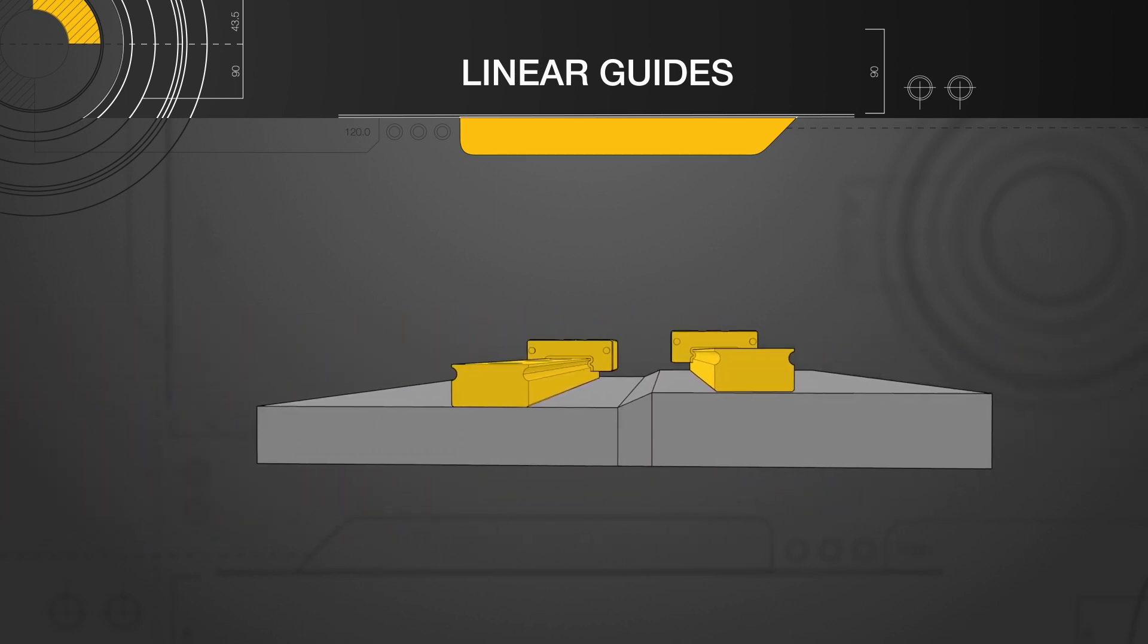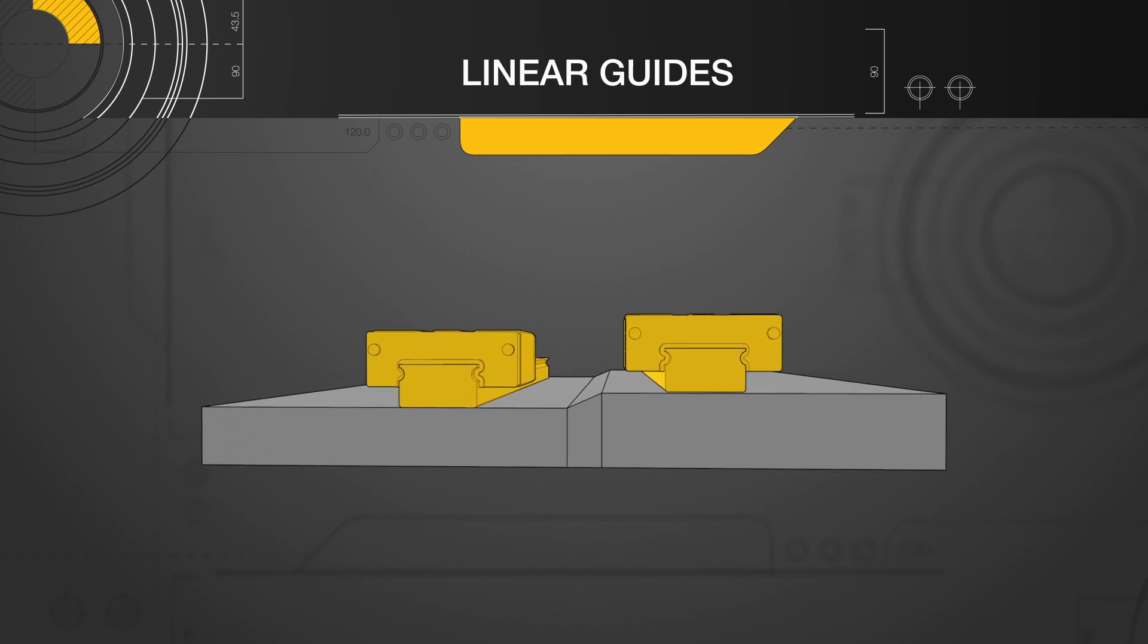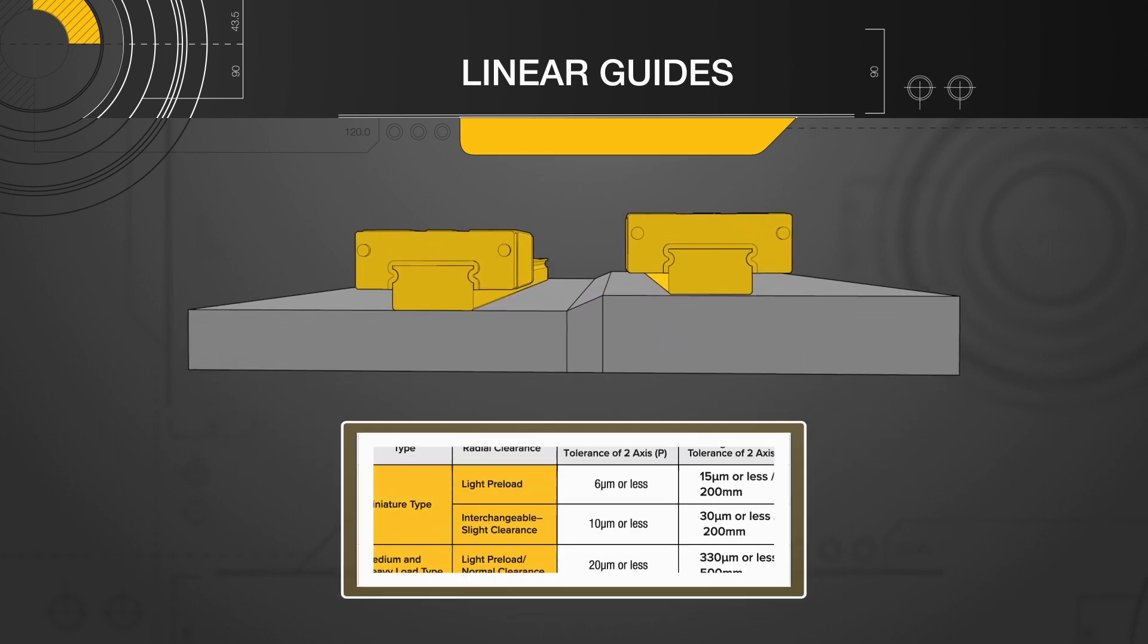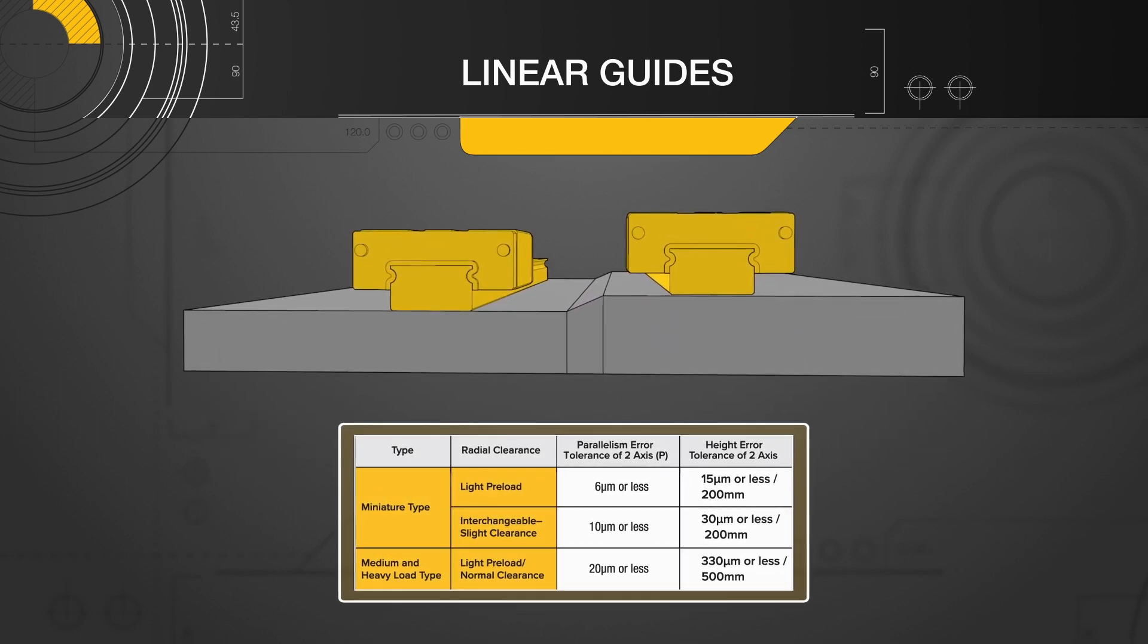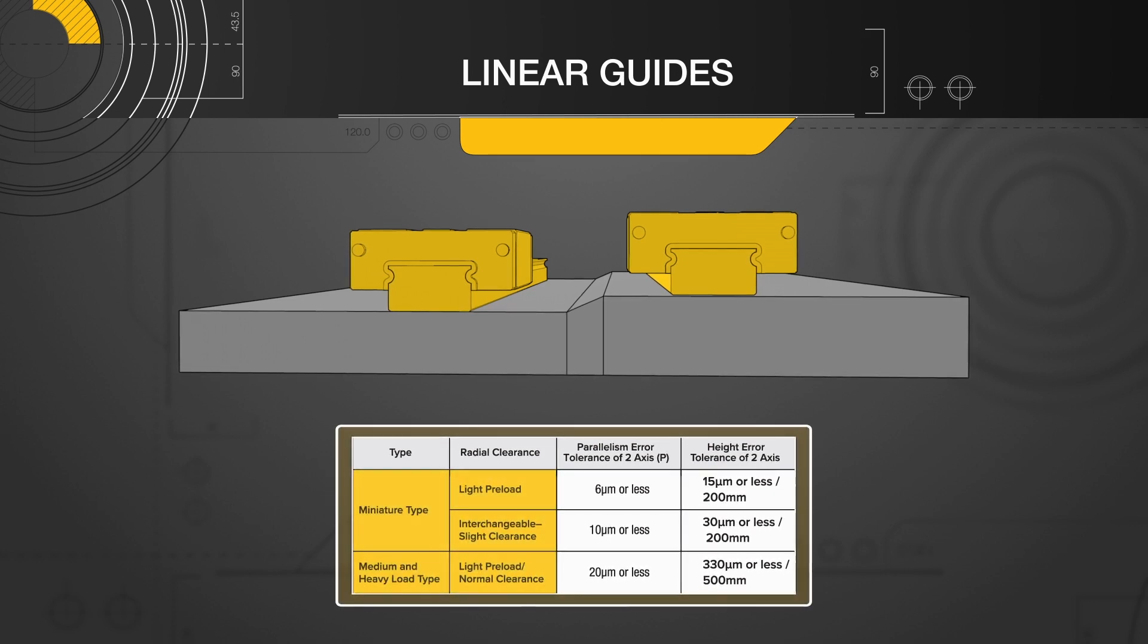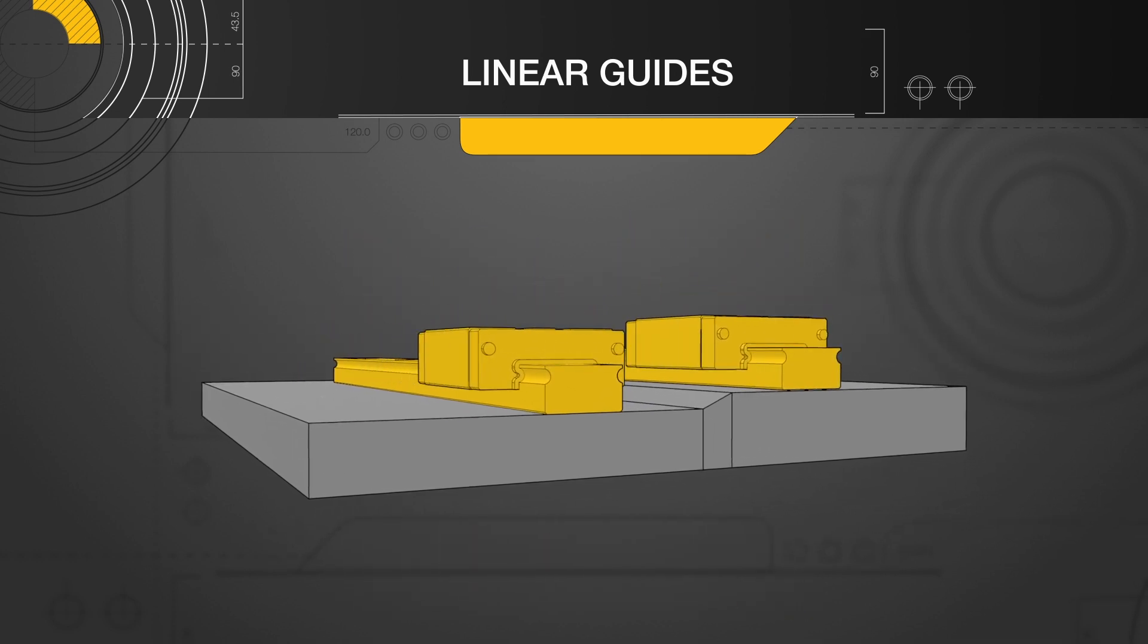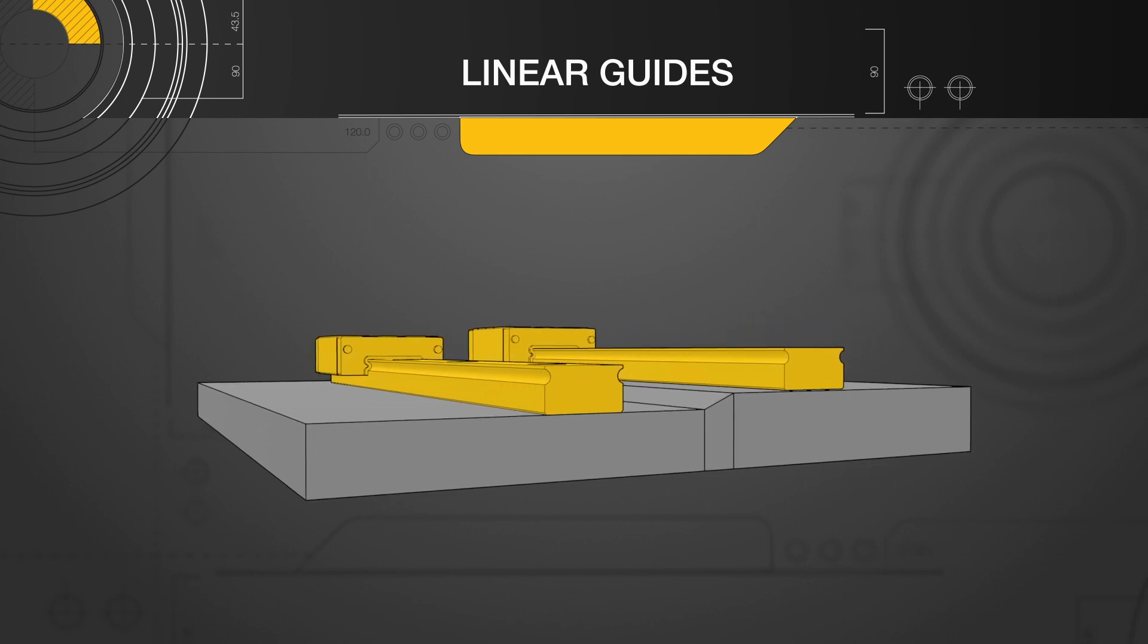When machining the base, it is important to reference the allowable height error tolerance between the master and subsidiary rail. The maximum height should not exceed the corresponding error based on the Linear Guide size and preload. Just like rail parallelism, if this spec is exceeded, the L10 life will decrease or the Linear Guides will bind.